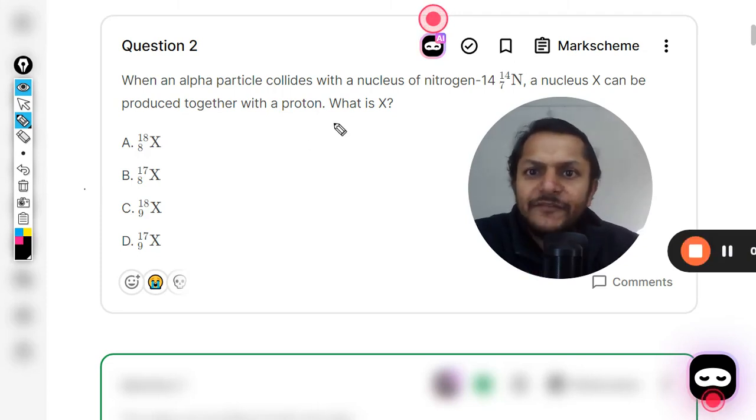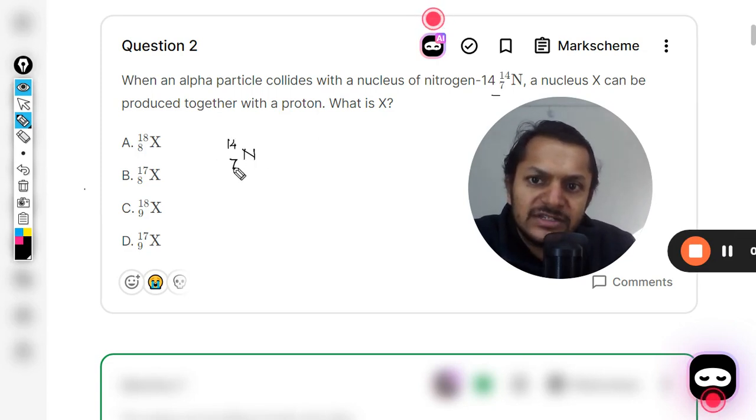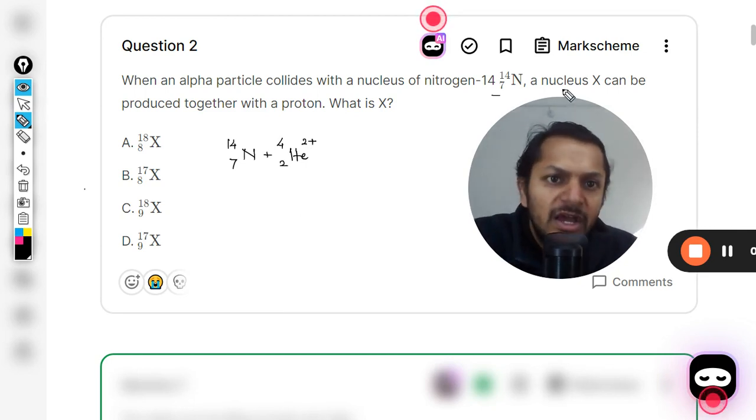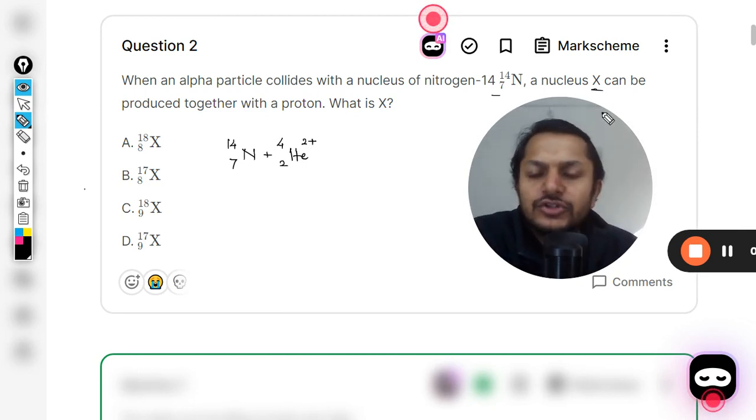Let us see what is there in this question. When an alpha particle collides with the nucleus of nitrogen-14, the reaction can be written as ¹⁴₇N. An alpha particle is coming and colliding with it, ⁴₂He, which has a charge of 2+. A nucleus X can be produced together with a proton.